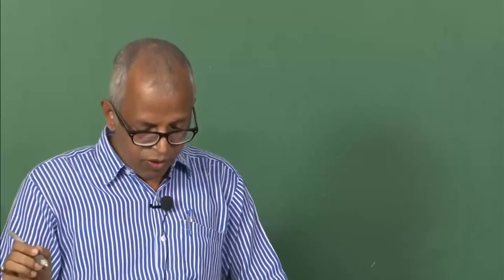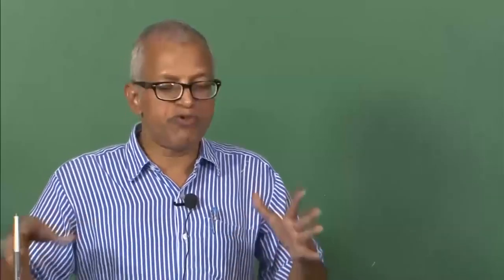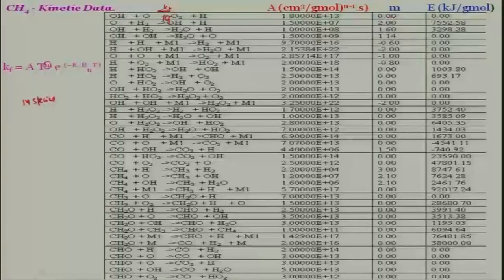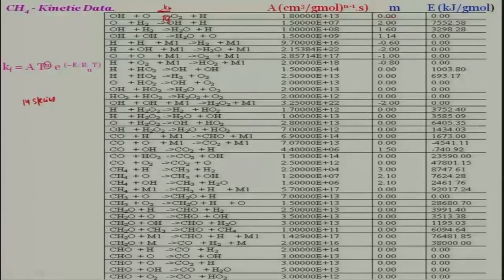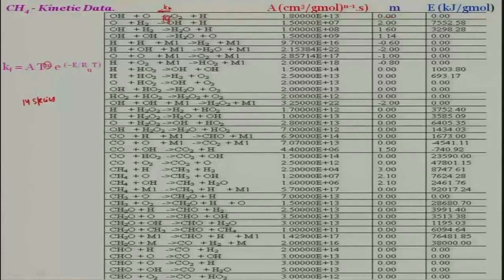Now, people are using a very large number of reactions in chemical mechanisms for methane-air and higher hydrocarbons, because CNG is being used which contains methane but also some other higher hydrocarbons. Higher hydrocarbons mean more species, more reactions, and it will take a lot of time to compute. Unless you have parallel computing and you are doing a very complex problem like an internal combustion engine, gas turbine, or rocket engine, it will be very difficult to predict something meaningful using detailed kinetics.